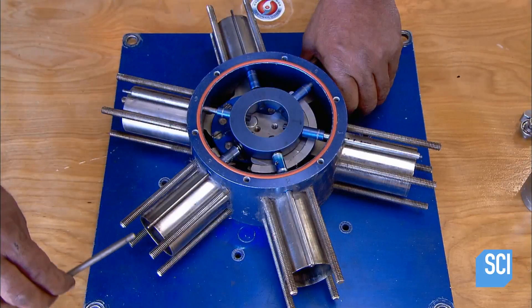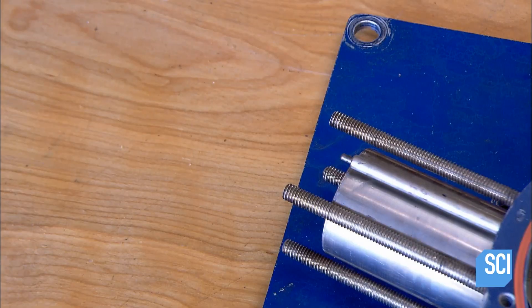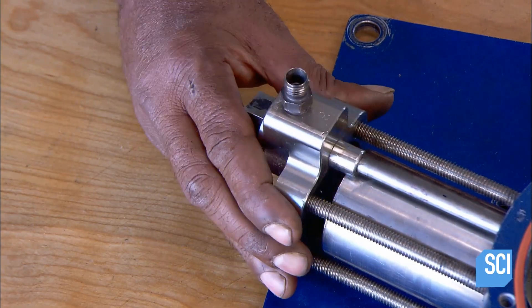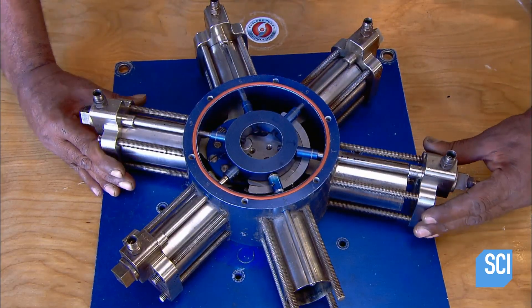They insert the base of each push rod into a guide ring, then attach the cylinder heads, each of which houses a steam entry valve. They insert the push rod into the valve.